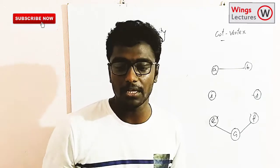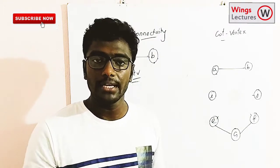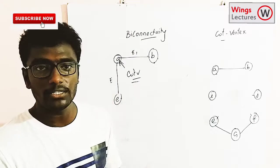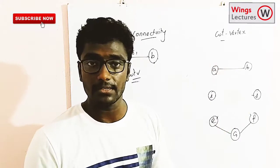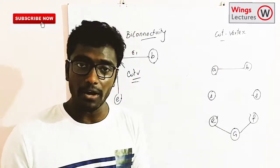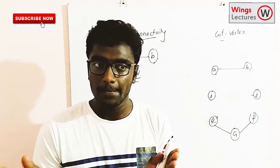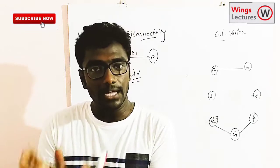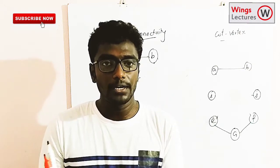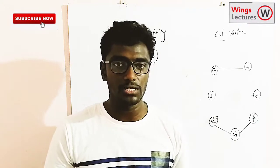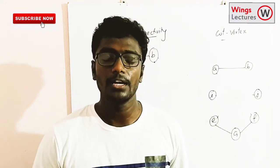If you have any doubts you can comment in the comment section. These concepts are used in network topologies. When dealing with networks we have to ensure the biconnectivity property and identify which node is a cut vertex. For example, if there's a network connection between two organizations, there may be a cut vertex between them. If there's any problem on that particular node, it will collapse the whole network system for those two organizations.